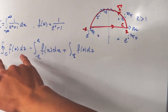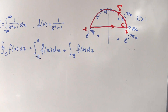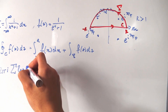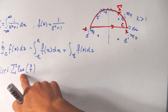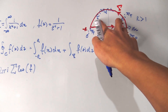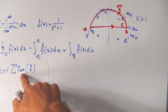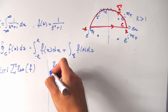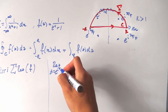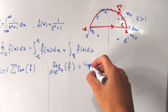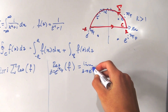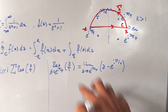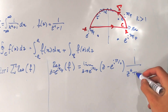Now let's calculate the value of the contour integral. By the residue theorem, it equals 2πi times the sum of the residues of f inside the contour. Let's find the residue at z equals e to the iπ/4. That's the limit as z approaches e to the iπ/4 of (z minus e to the iπ/4) times 1 over (z to the 4th plus 1). Both the numerator and denominator go to 0, giving a 0/0 situation.